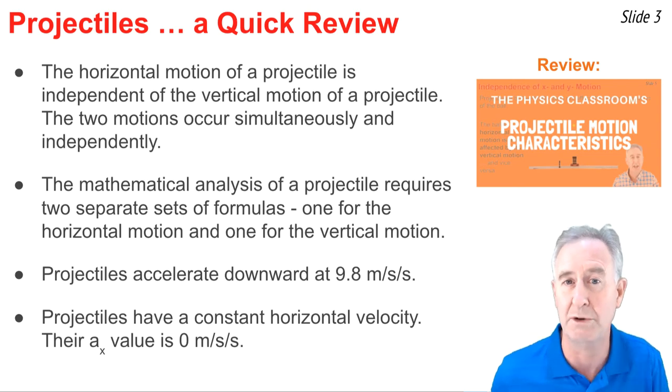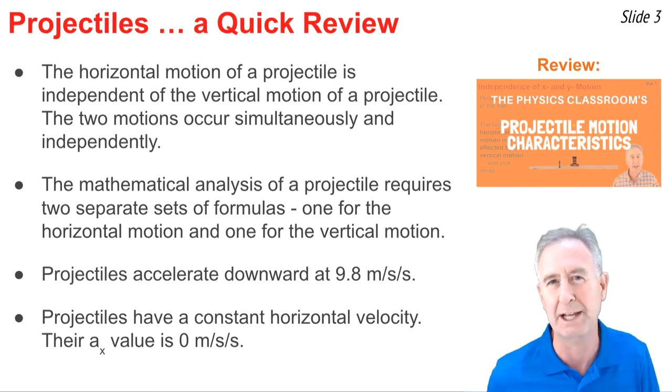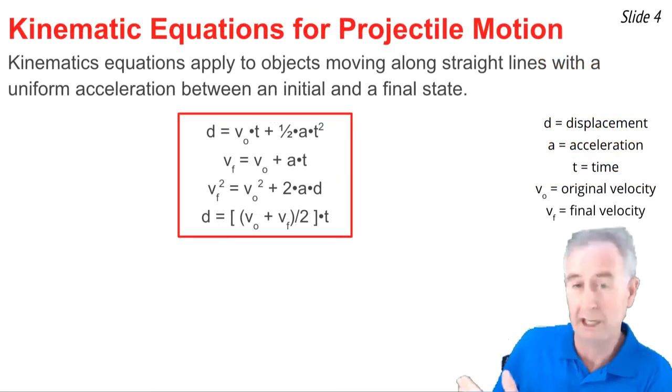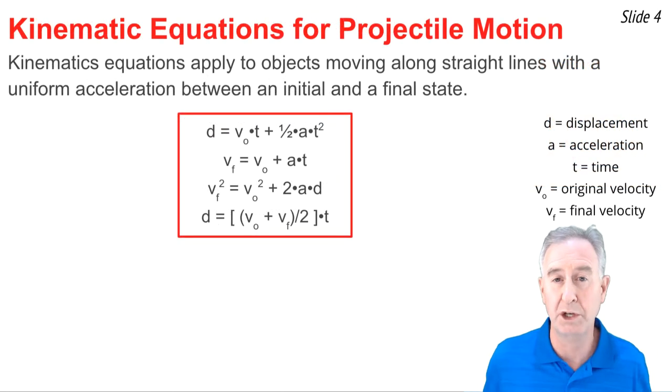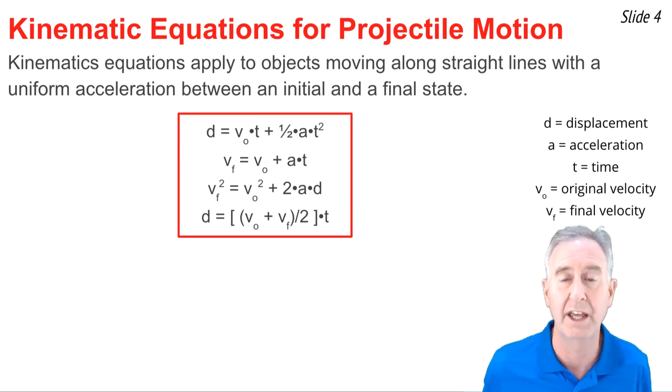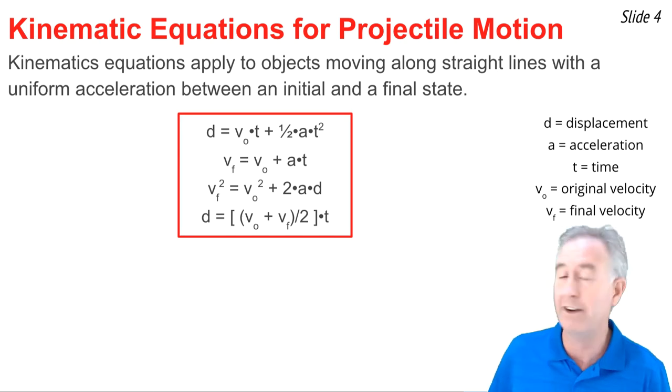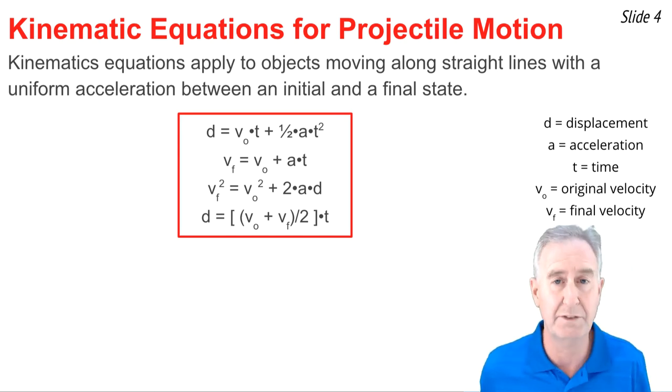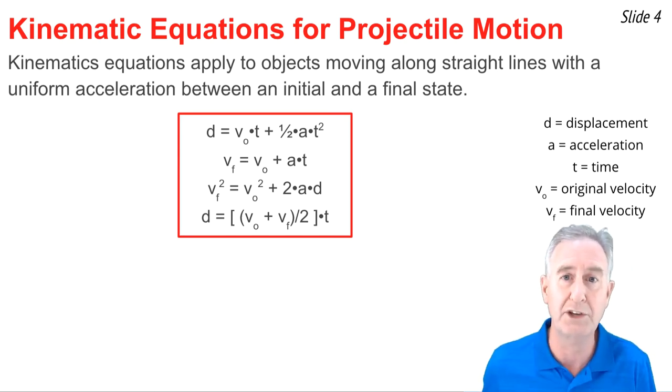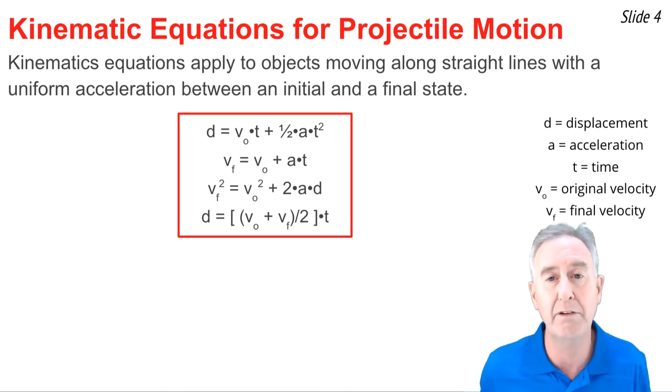Here you see four kinematic equations, which are used to analyze the motion of objects moving along straight lines, accelerating uniformly from an initial to a final state. In the equations, there are five variables. D stands for displacement, A for acceleration, T for time, and then V for velocity.